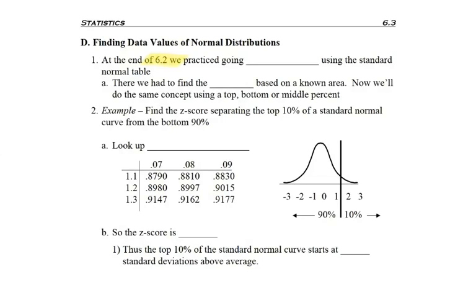And so at the end of section 6.2, we actually practice going backwards using the standard normal table. In those cases, we had to find the z-score based on some sort of known area or probability or percent.